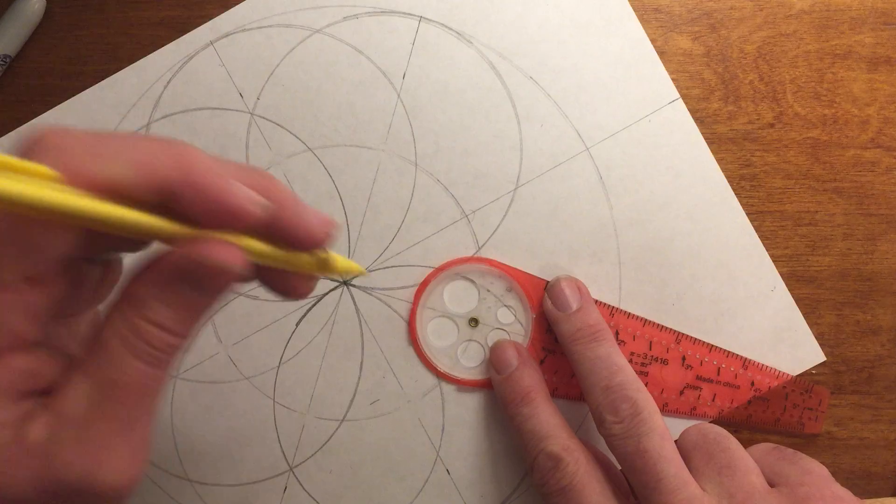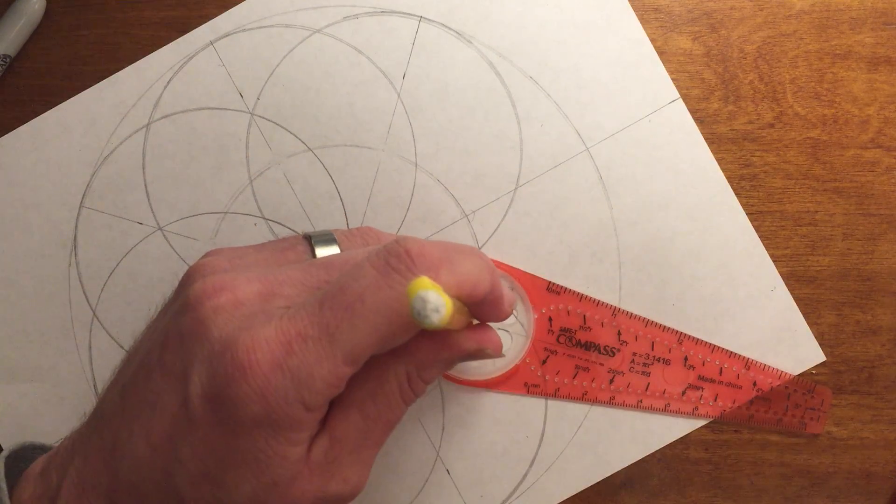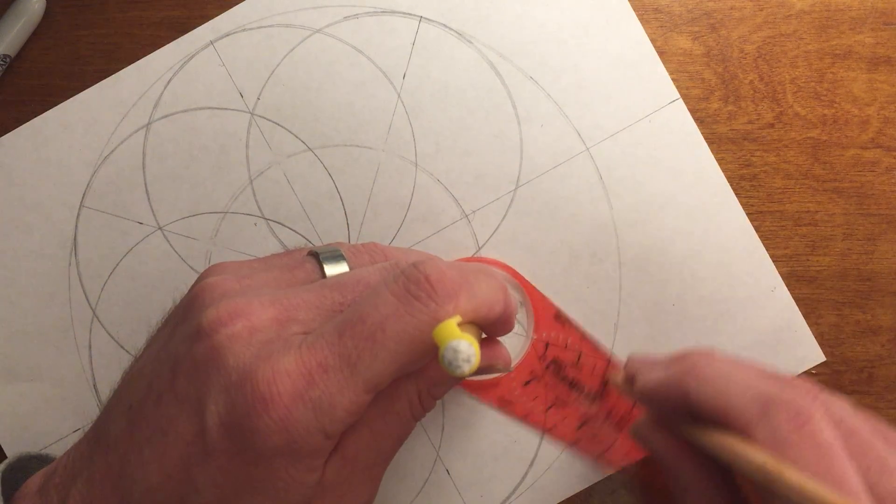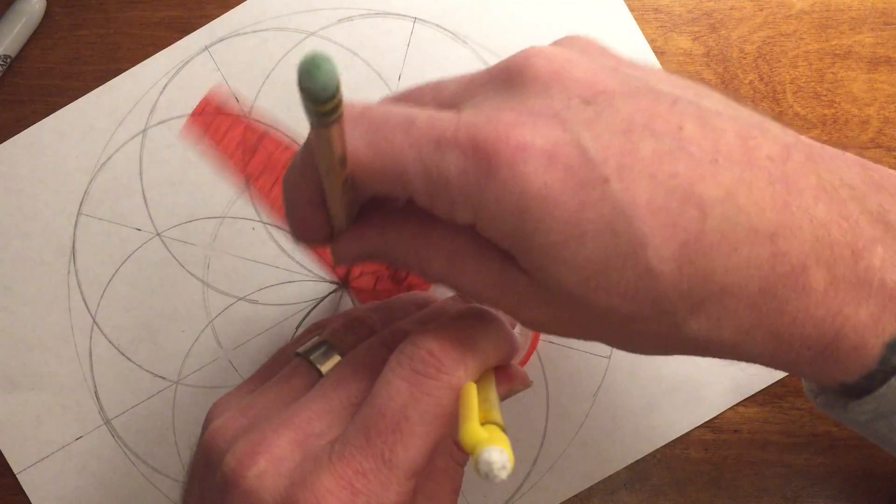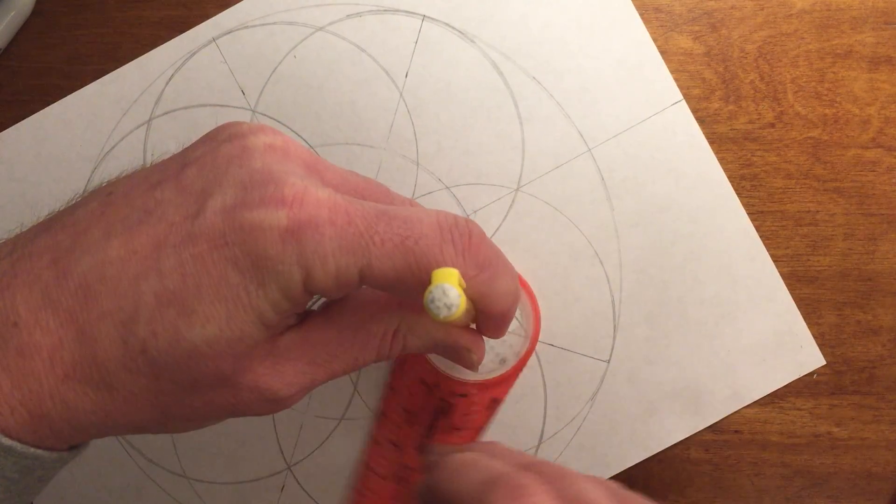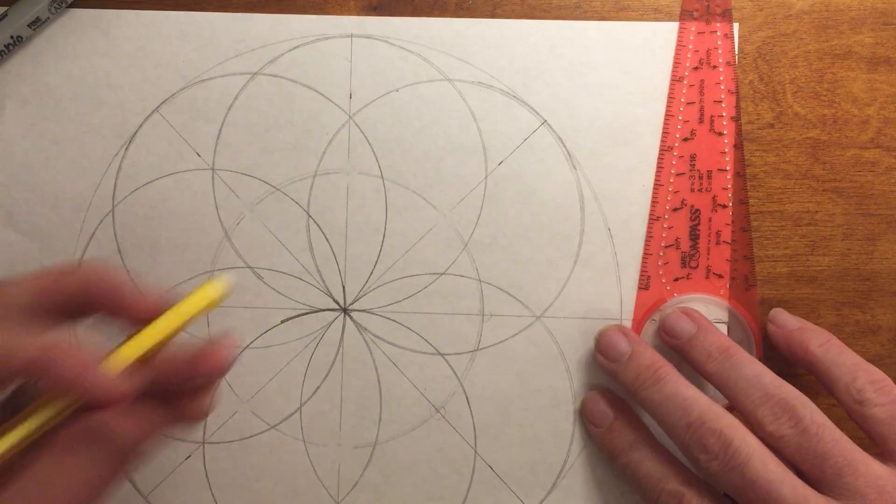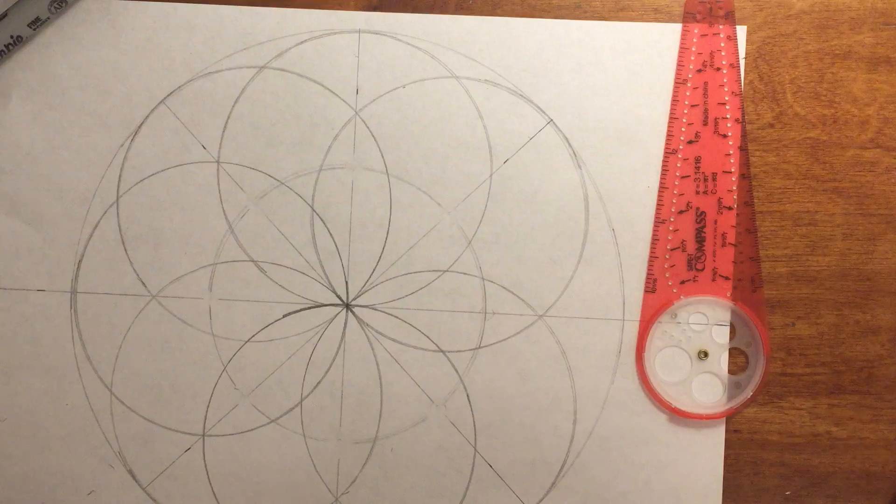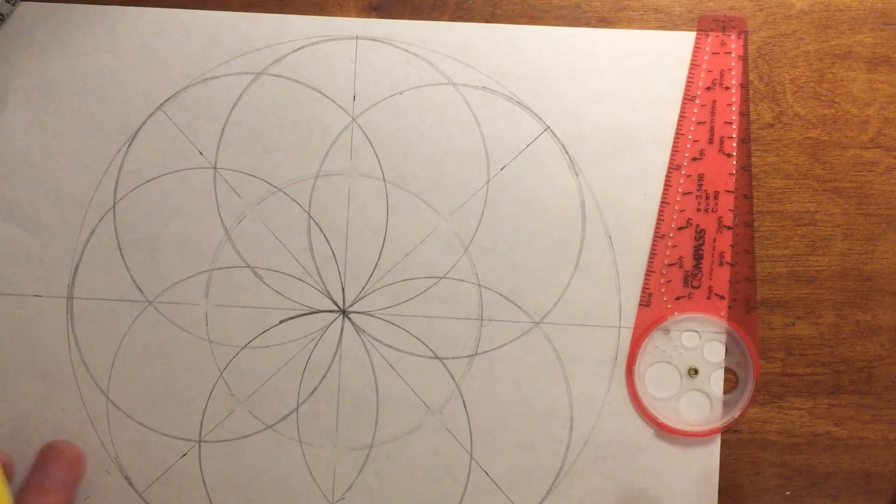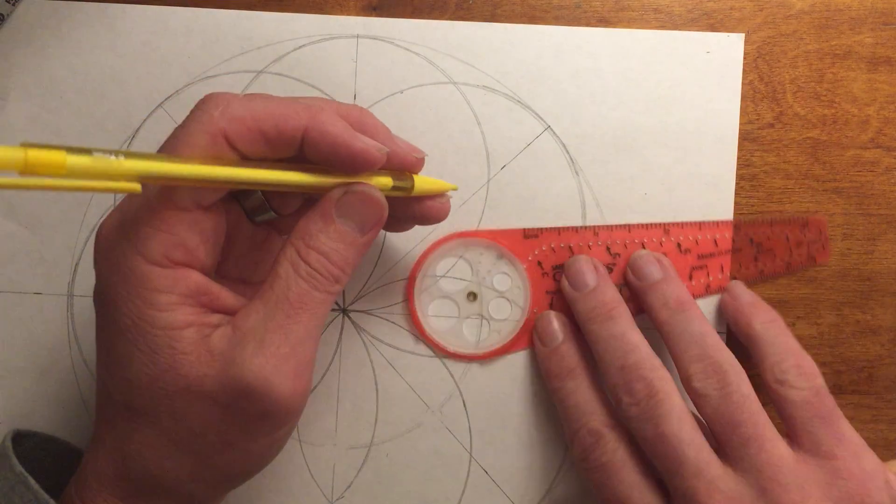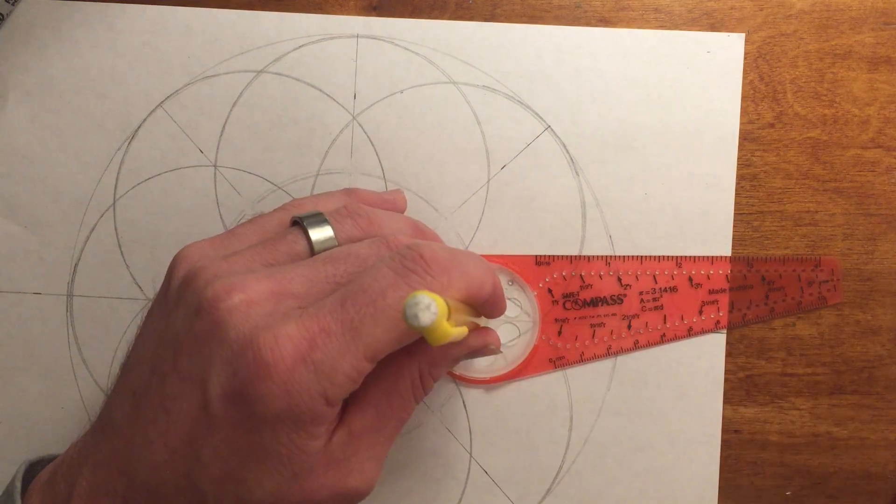I've got two more, and then I just have a whole lot of erasing to do. That's why you draw real light. Once again, math and pencils. There's my seventh. You can see all these patterns that are happening now. I think it's really cool, and hopefully you think it's really cool too.